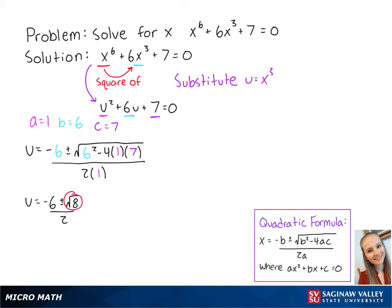The radical can be simplified because 8 equals 4 times 2, and the square root of 4 is 2. So now we have u equals negative 6 plus or minus 2 times the square root of 2 over 2. If we divide the numerator by 2, we get negative 3 plus or minus the square root of 2.